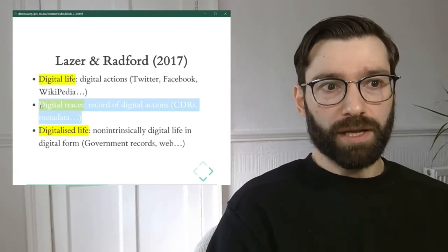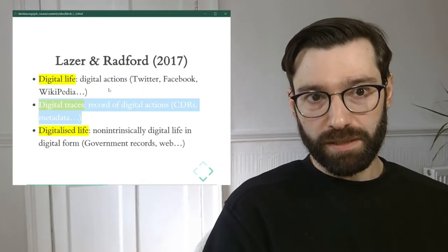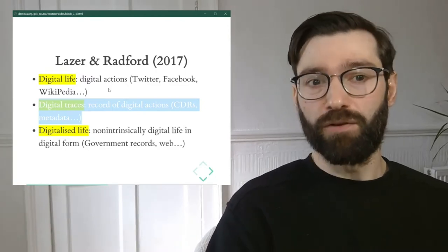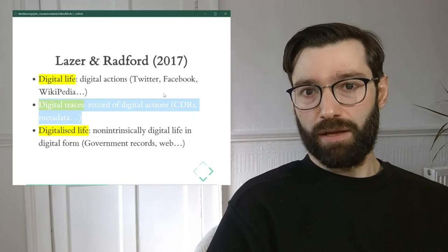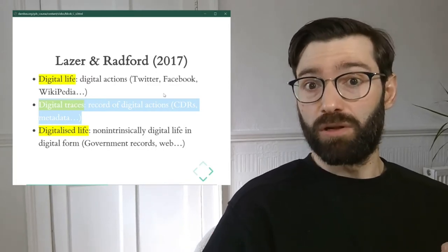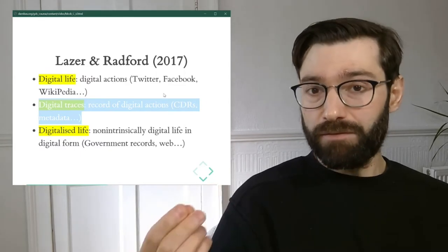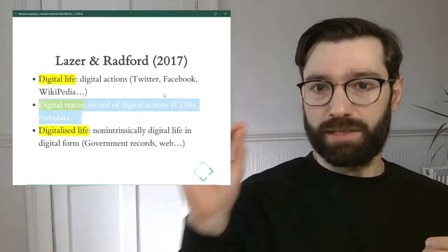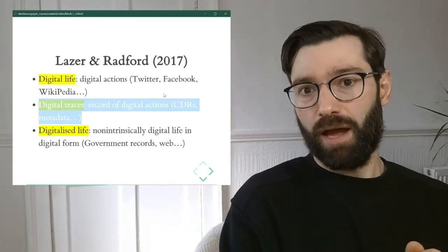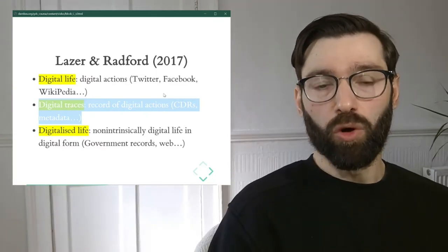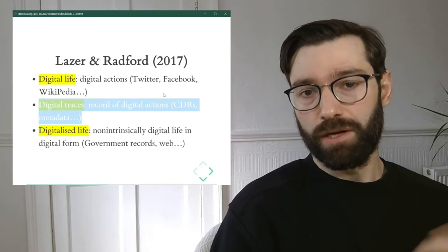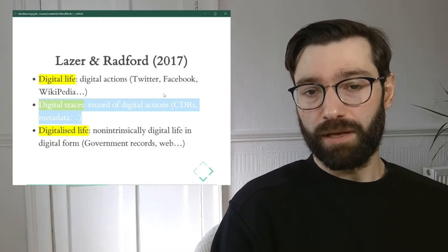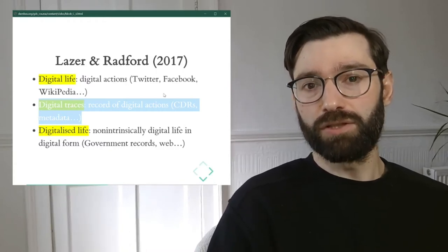The second type is what they call digital traces — records of digital actions, but not the actions themselves. For example, CDRs are the records that your telecom keeps when you make a call to somebody. The call itself is not the data; the data is the record that says you held a digital action — a phone call, a Zoom call, or a video call. You may have seen this referred to in more general literature as metadata.